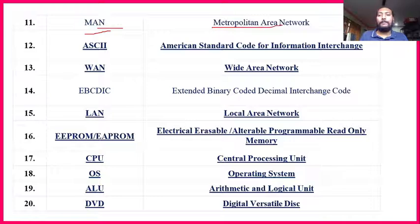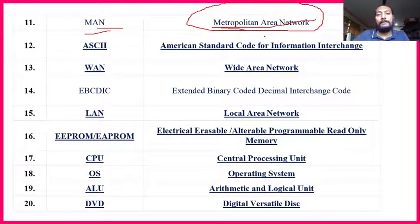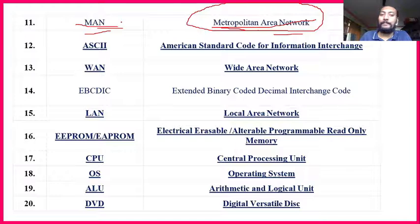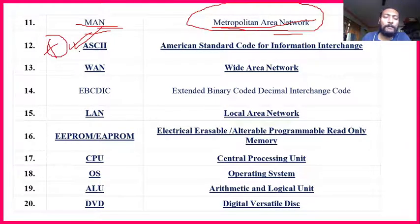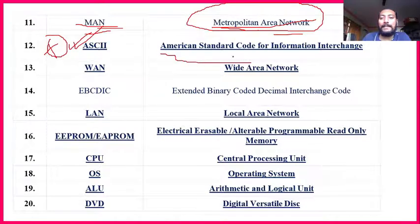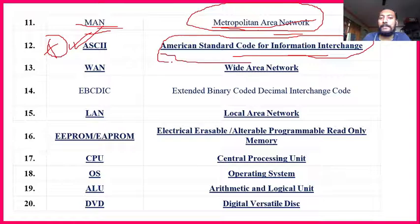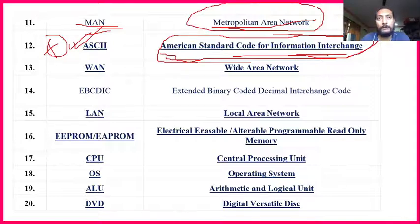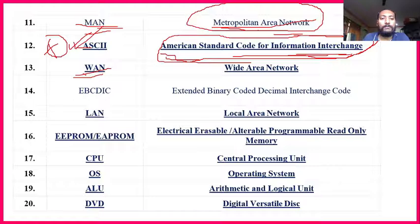MAN — Metropolitan Area Network — is not that important, but you can read it. This network is for a metropolitan area — a specific software system for that coverage. ASCII — American Standard Code for Information Interchange — is very, very important. In the last five years of question papers, this has appeared three times. They made a specific code for changing data from one computer to another — that is called interchange.